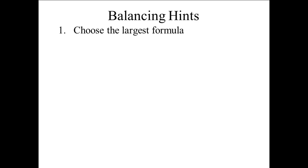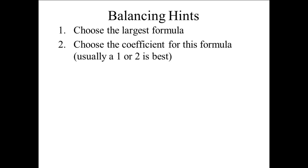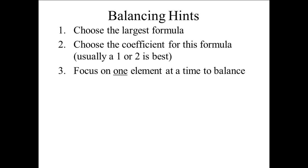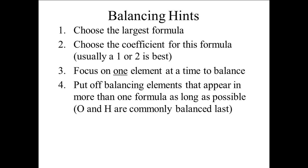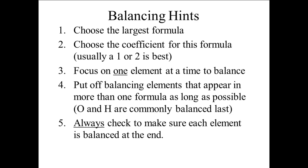Here are some hints to help you balance reactions. Number one: choose the largest formula — the one with the most atoms. Two: choose the coefficient for this formula; usually a 1 or a 2 is best. Three: focus on one element at a time to balance and ignore the others. Four: put off balancing elements that appear in more than one formula on any side as long as possible — O and H are commonly balanced last. And five: always check to make sure each element is balanced at the end. You may pause the video here to write down these hints if you wish.